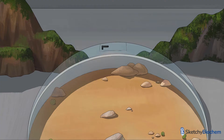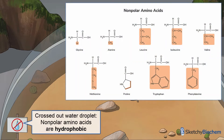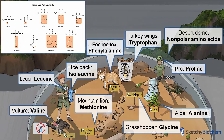First, we're going to check out the desert exhibit to detail the nonpolar amino acids. The nonpolar amino acids are hydrophobic, or water-fearing, as shown by the sign of a crossed-out water droplet. We'll represent all the nonpolar amino acids inside this glass biodome. We have a glycine grasshopper, an alanine aloe plant, zookeeper Lucy for leucine, an isoleucine ice pack, a valine vulture, a methionine mountain lion, a very professional proline pro, one bucket of tryptophan turkey wings, and a phenylalanine fennec fox.